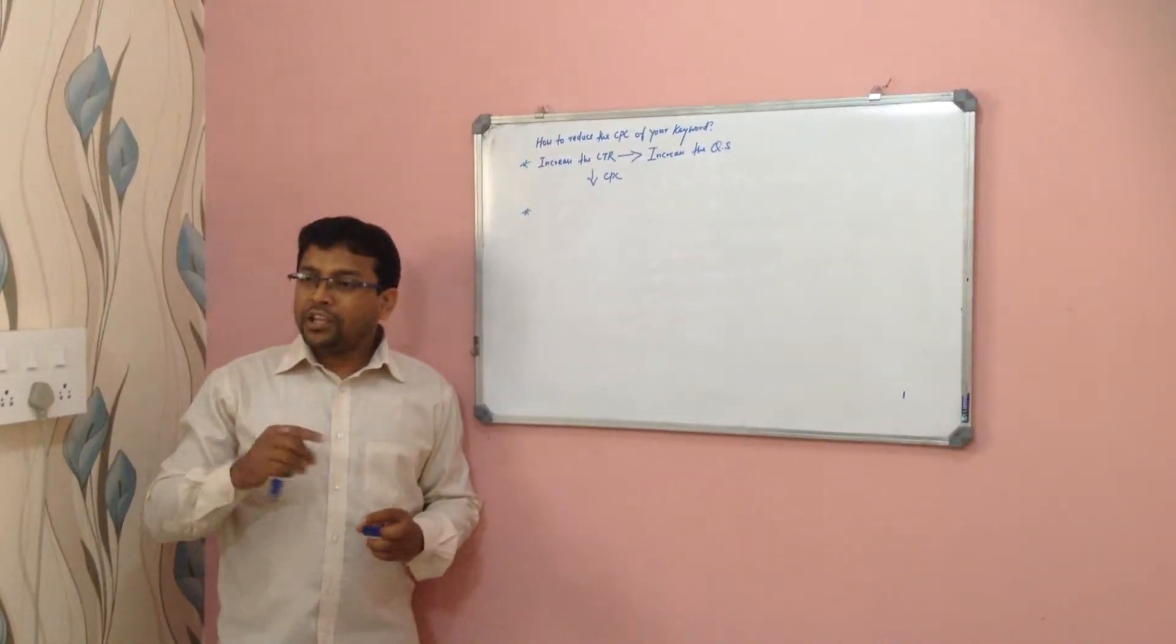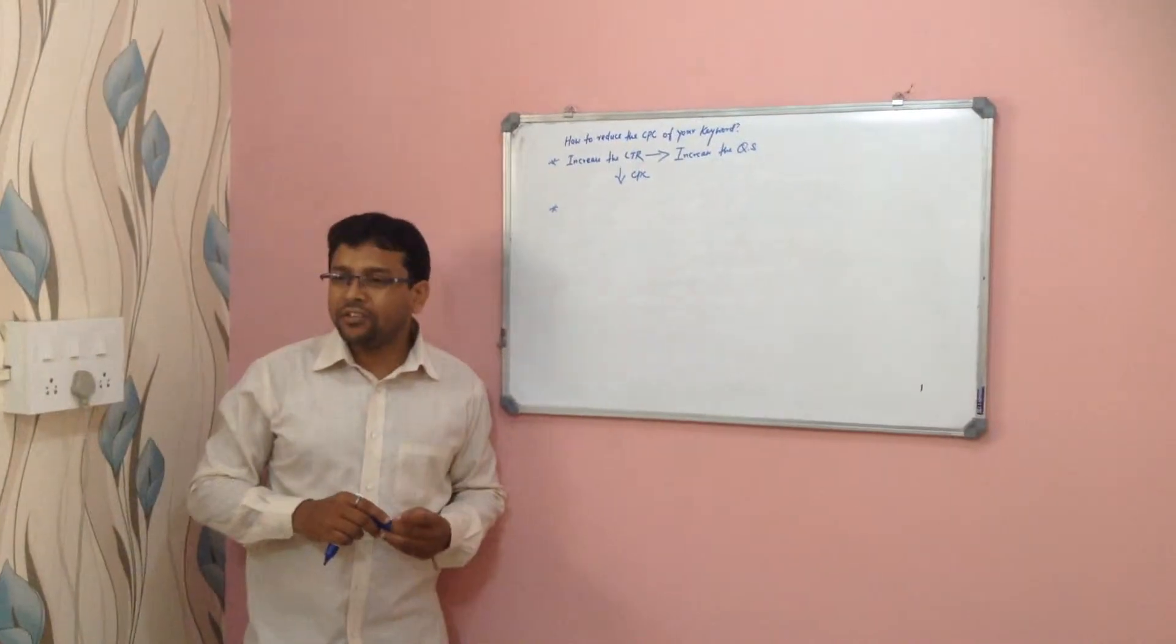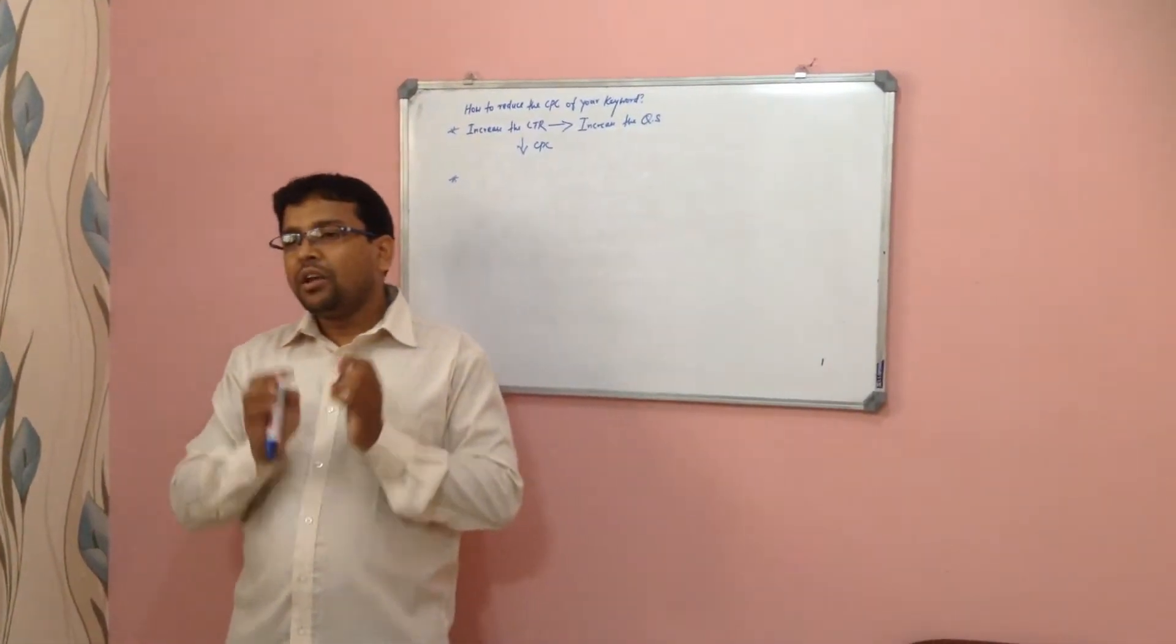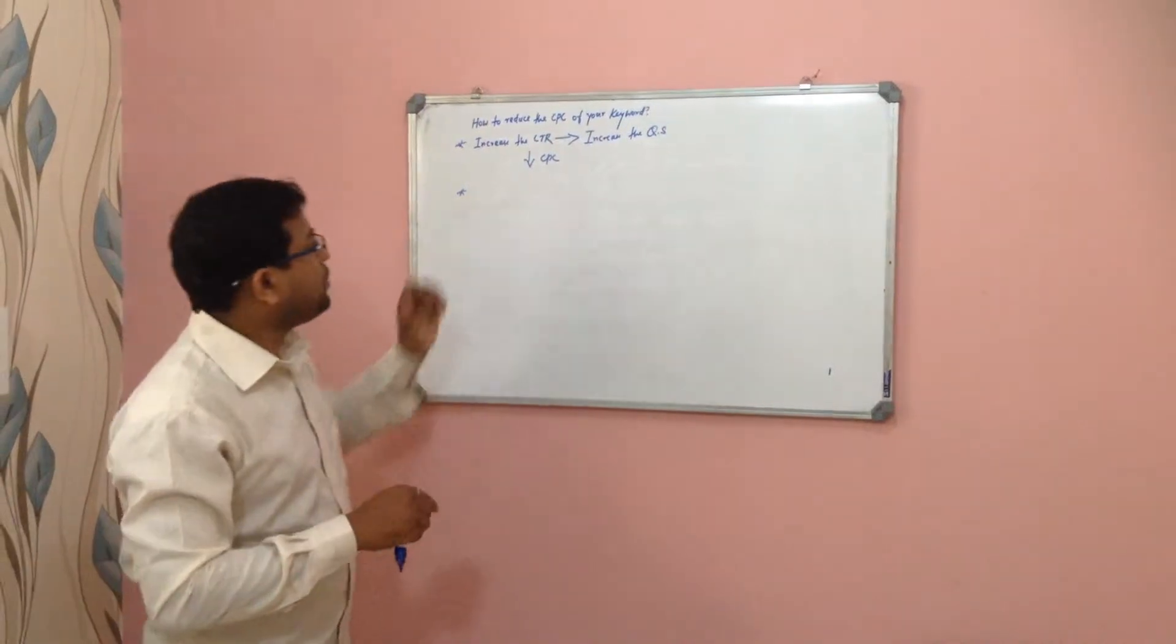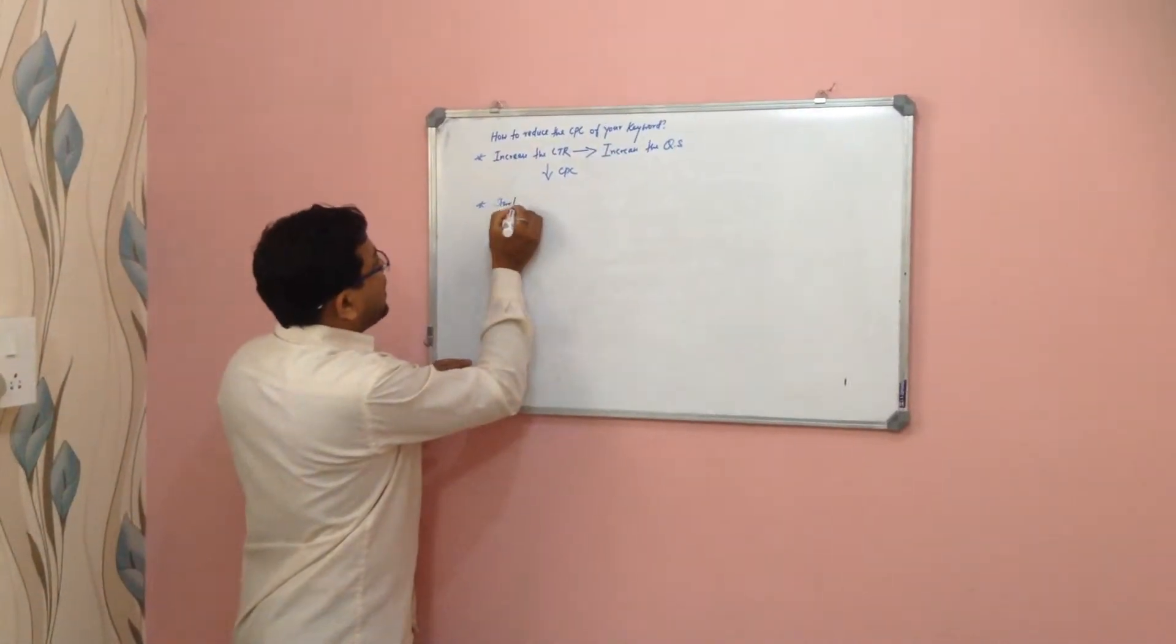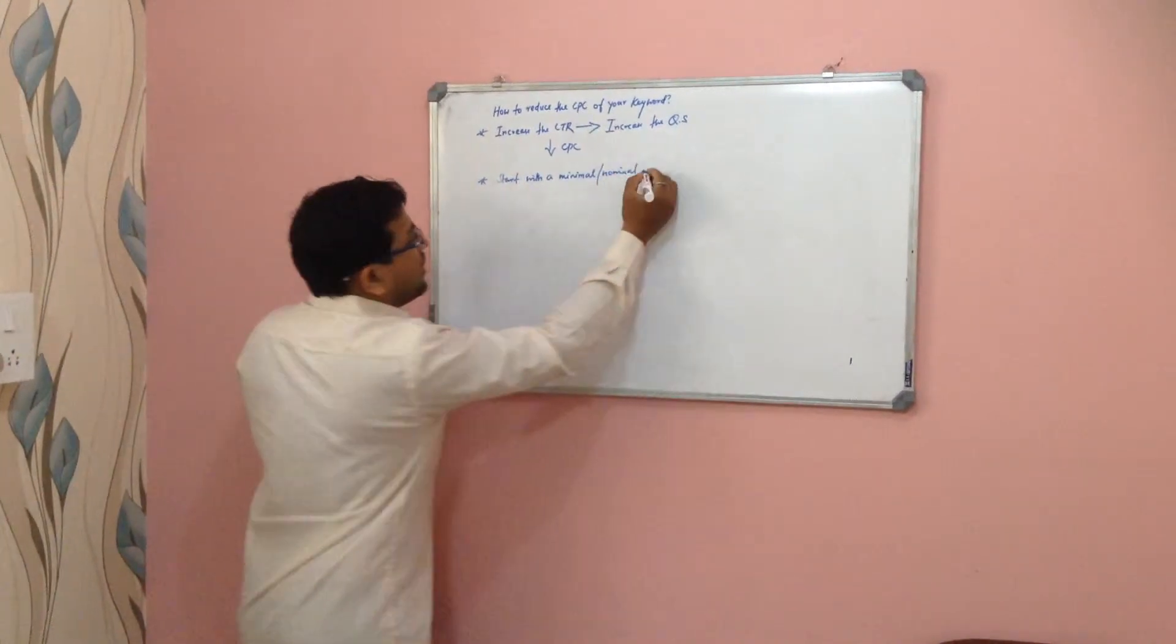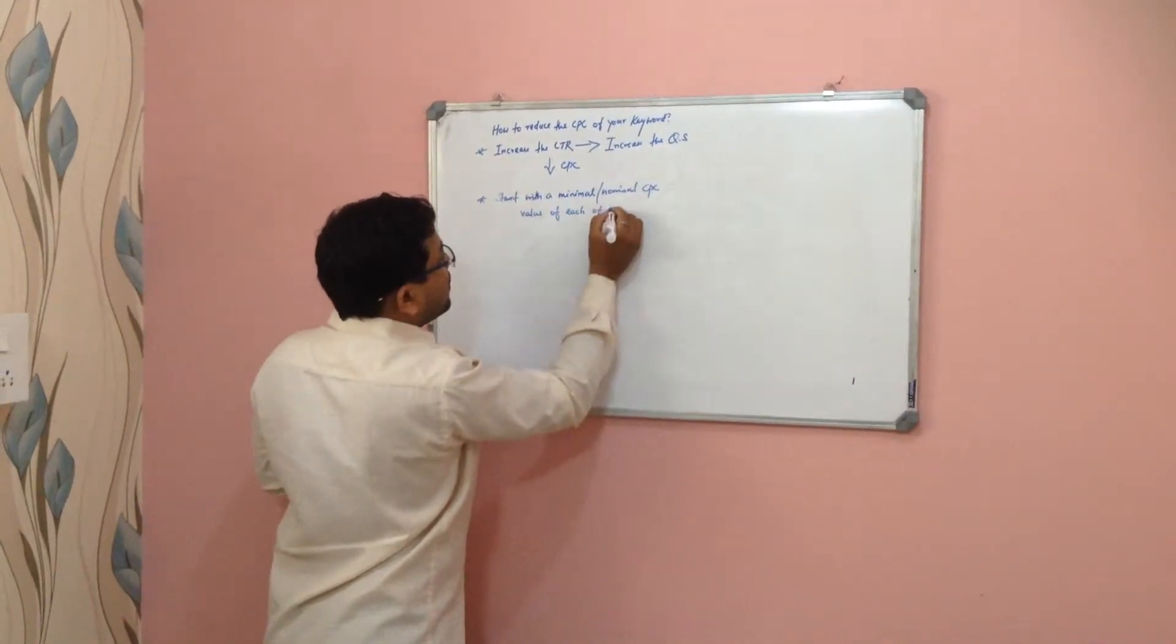The very important thing is when we start with any new account, we don't directly define the bid at a higher price. We start with a very nominal CPC price for every keyword. Sometimes a particular keyword can do really good with a 50 rupees bid value. Then why should we start with 30 rupees? So it's recommended that any time you start with a new account, start with a minimum or nominal CPC value for each of your keywords.